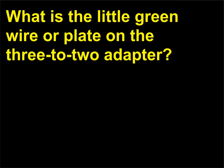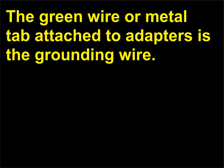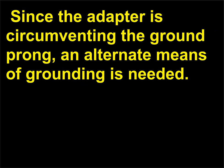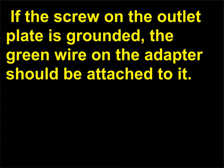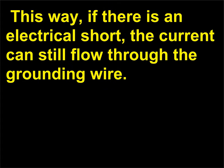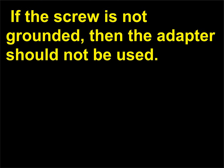What is the little green wire or plate on the 3-to-2 adapter? The green wire or metal tab attached to adapters is the grounding wire. Since the adapter is circumventing the ground prong, an alternate means of grounding is needed. If the screw on the outlet plate is grounded, the green wire on the adapter should be attached to it — this way, if there is an electrical short, the current can still flow through the grounding wire. If the screw is not grounded, then the adapter should not be used. An outlet tester available at most hardware stores can be used to make sure the screw is grounded.